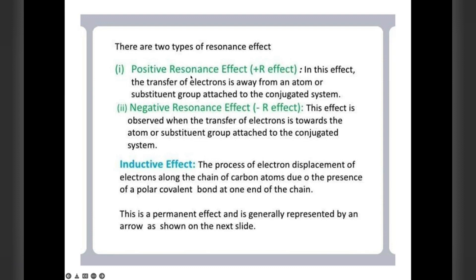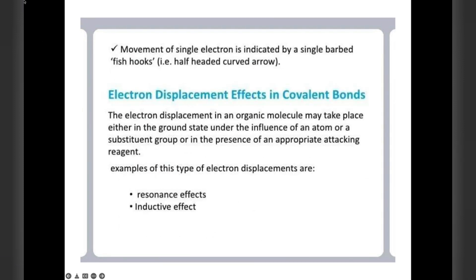We already said about positive and negative resonance effect and then inductive effect. Inductive effect is a process of electron displacement along the chain of carbon atoms due to the presence of polar covalent bond at one end of the chain. This is a permanent effect and normally shown by an arrow.